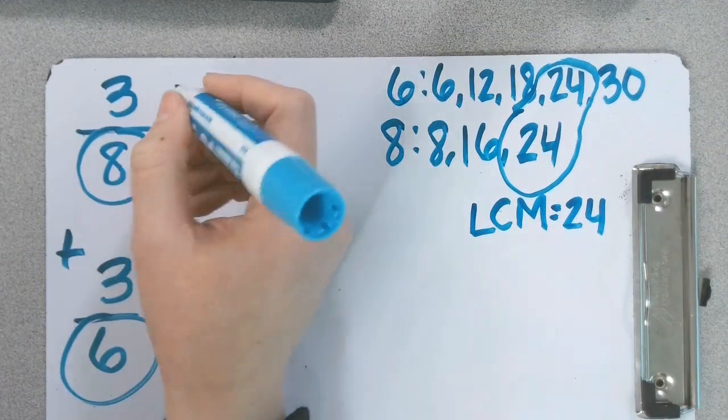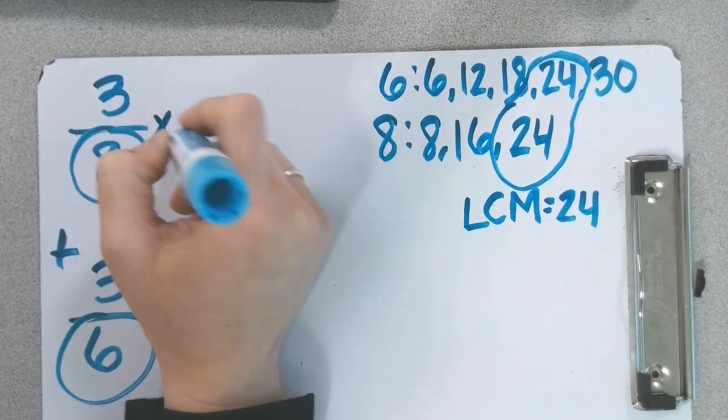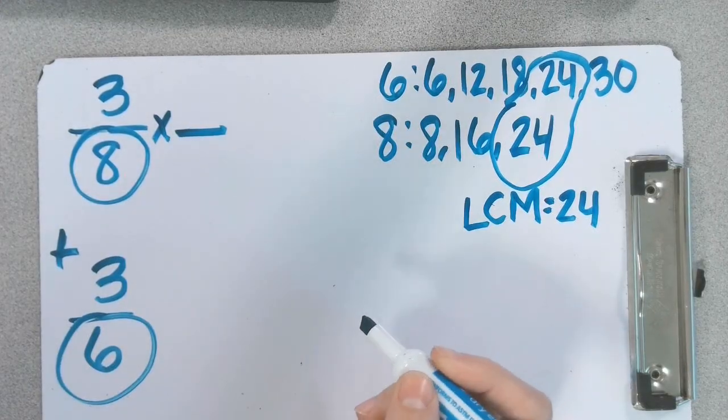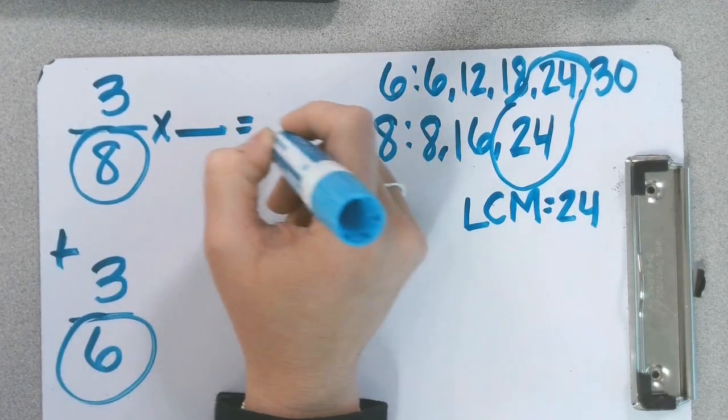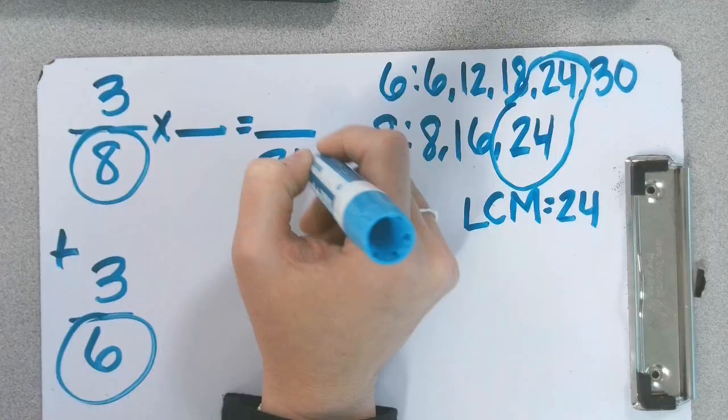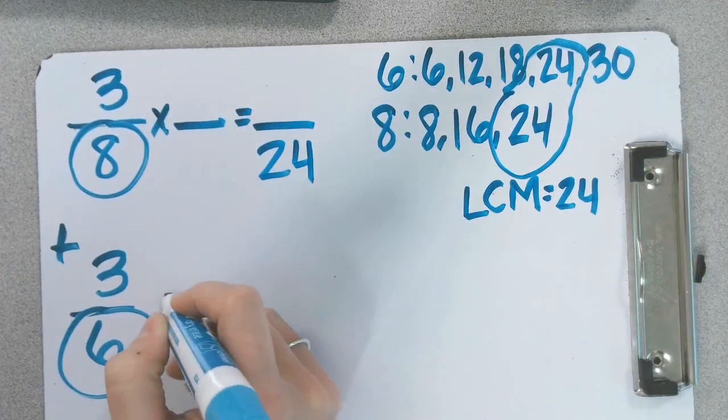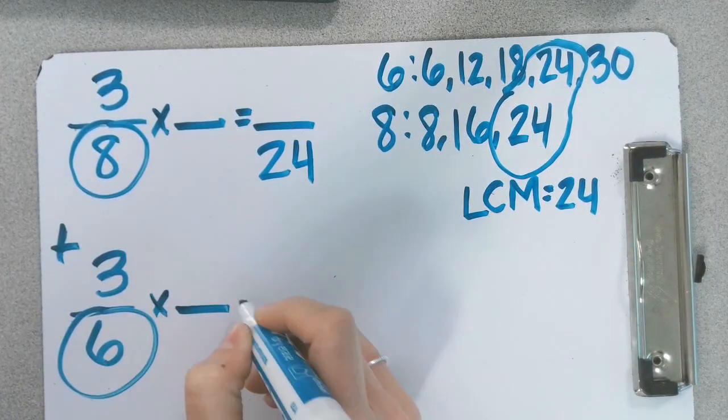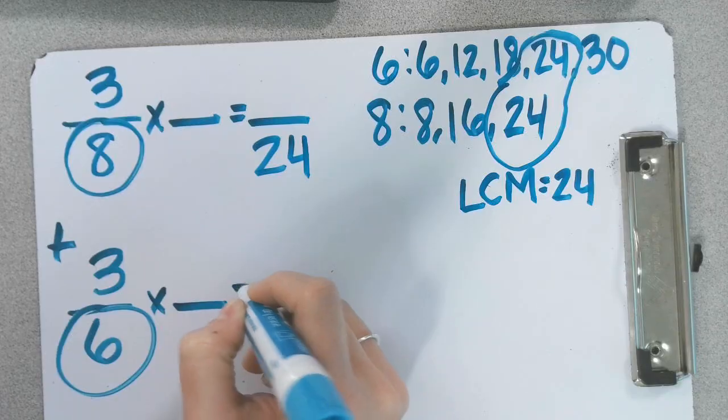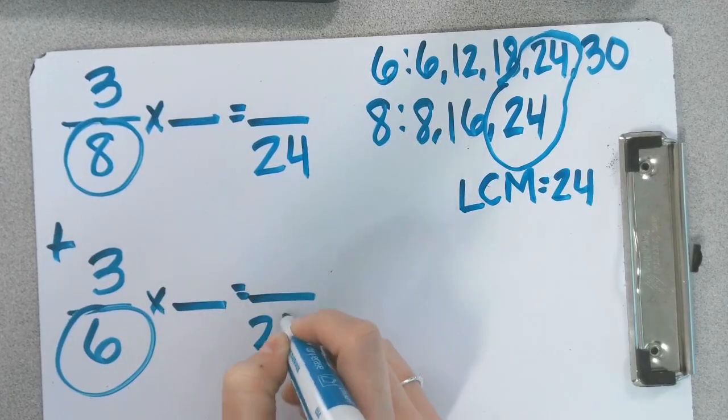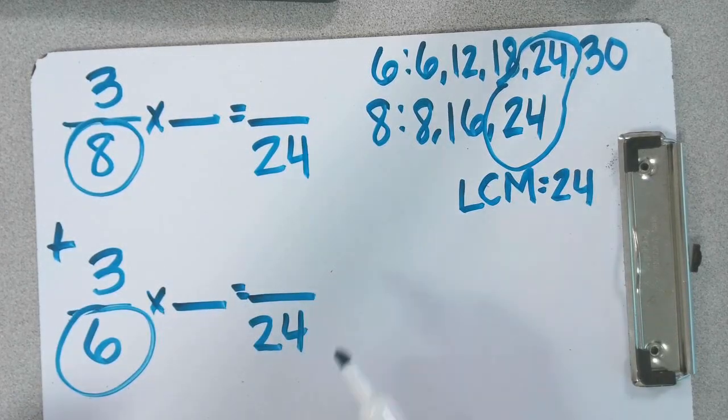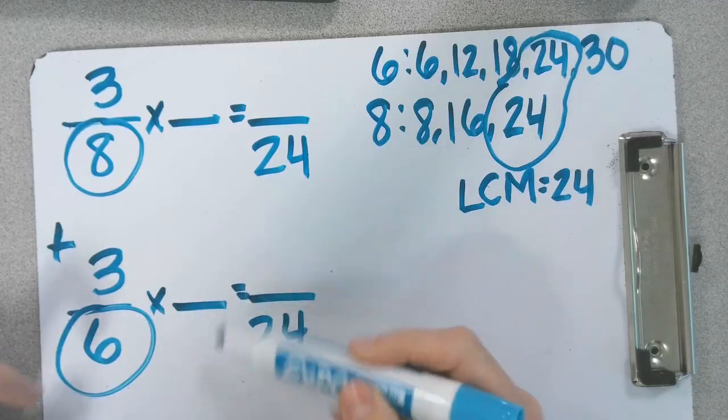So set up where you have equivalent fractions. We've got to multiply by a fraction equivalent to 1 in order to get a denominator of 24. Same thing down here. Multiply by a fraction equivalent to 1 to get a denominator of 24. Why do we multiply by a fraction equivalent to 1? Does anyone know?